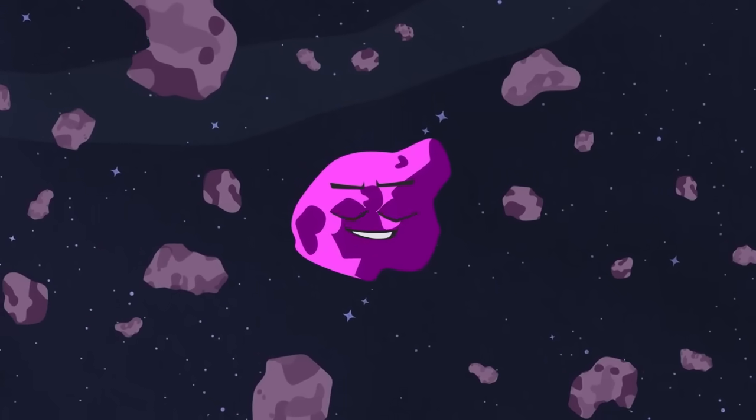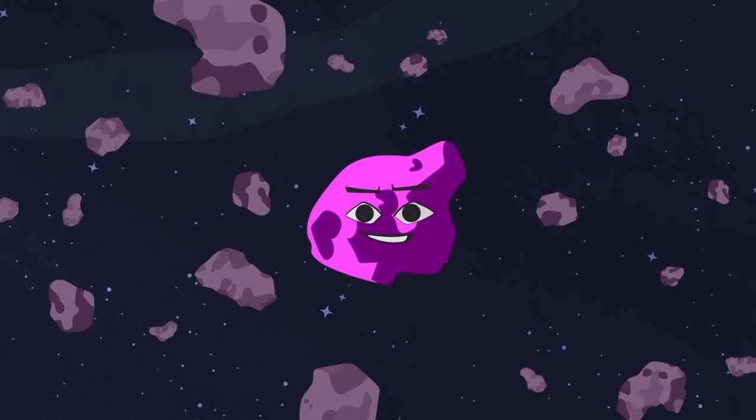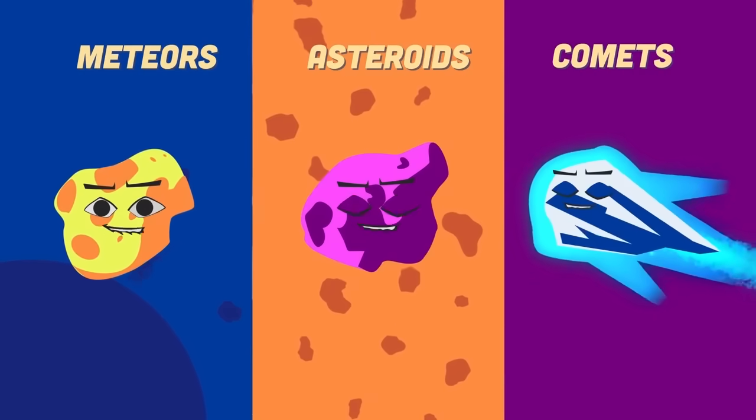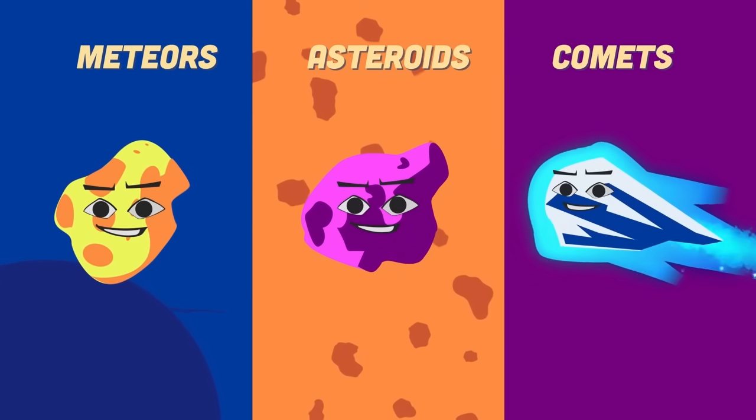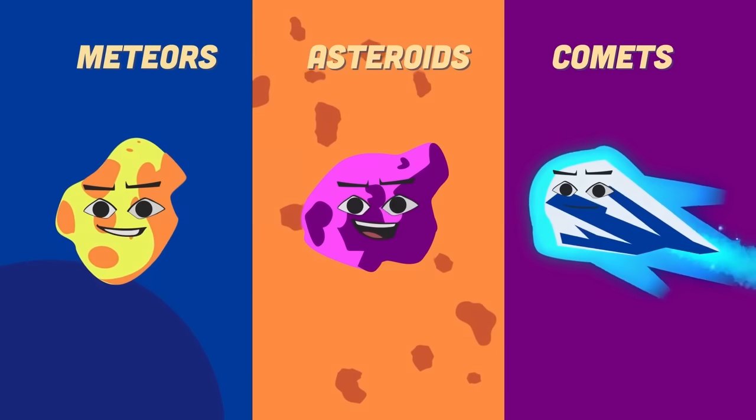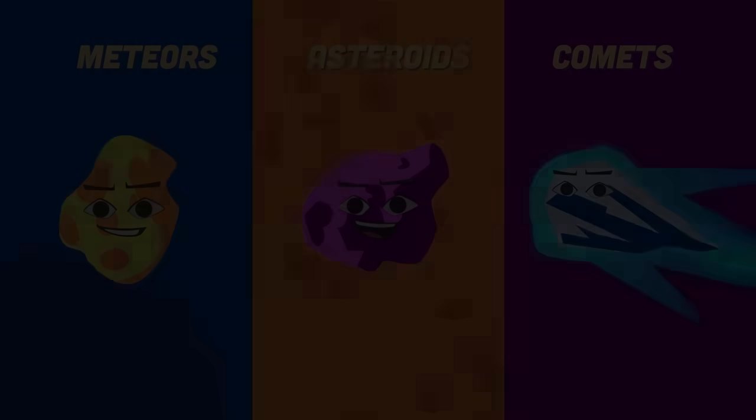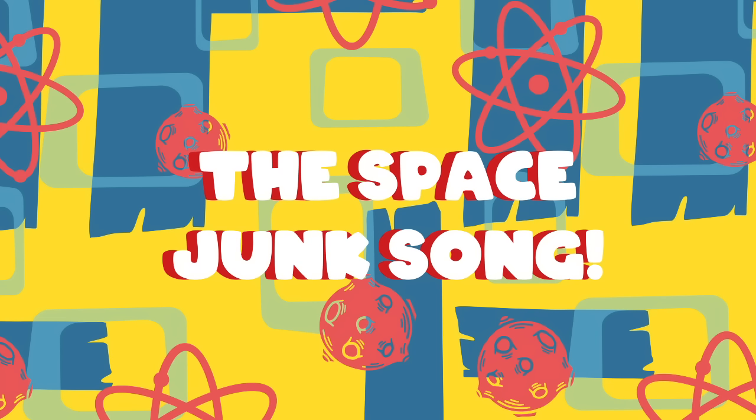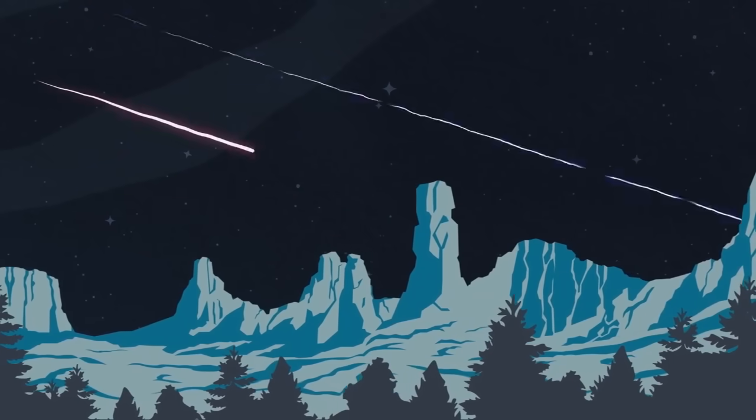An asteroid is an ancient rock from the formation of the place you live, called the solar system. What's the difference between meteors, asteroids, and comets? Let's take a look at how they travel in form! A comet is an object made of ice and dust.